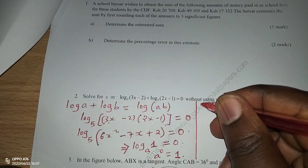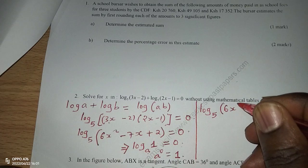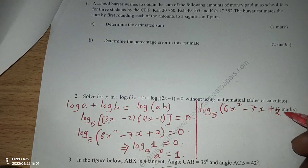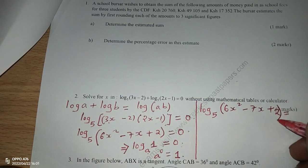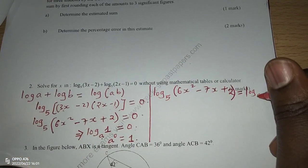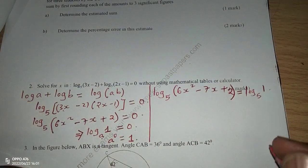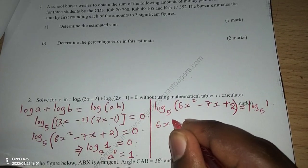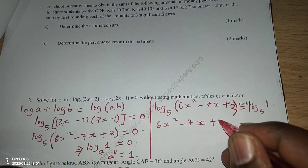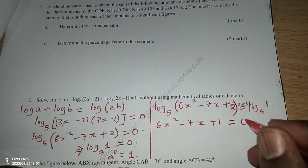Therefore, we can now rewrite the equation by saying the logarithm to base 5 of 6x squared minus 7x positive 2 equals to the logarithm to base 5 of 1. Then now we can drop logarithms and we equate the two sides of the equation, whereby 6x squared minus 7x, when we bring 1 to this side, we will have it as plus 1 because we will subtract 1 from 2. This one will remain with a 0 to this side.